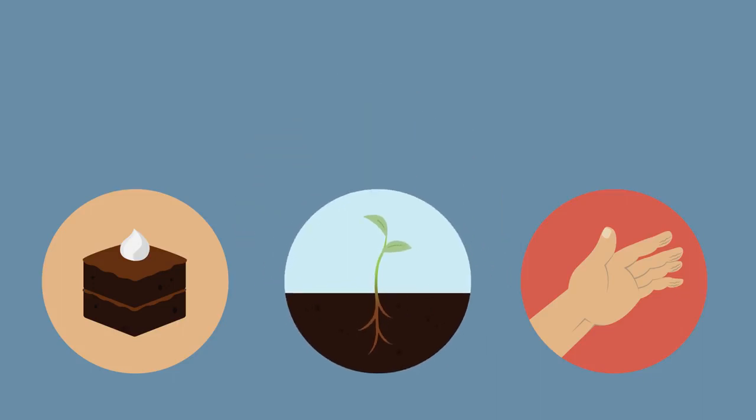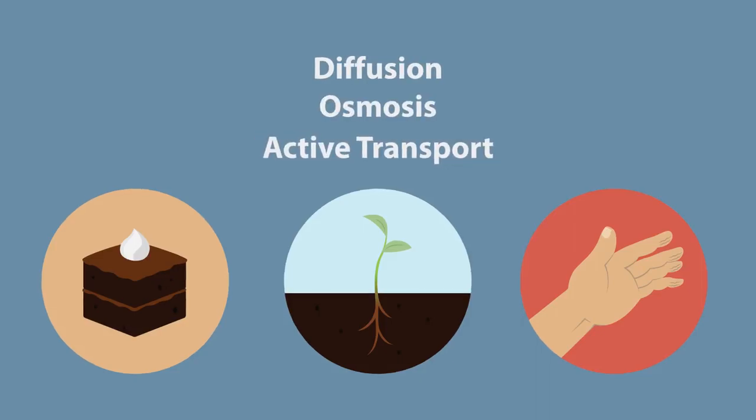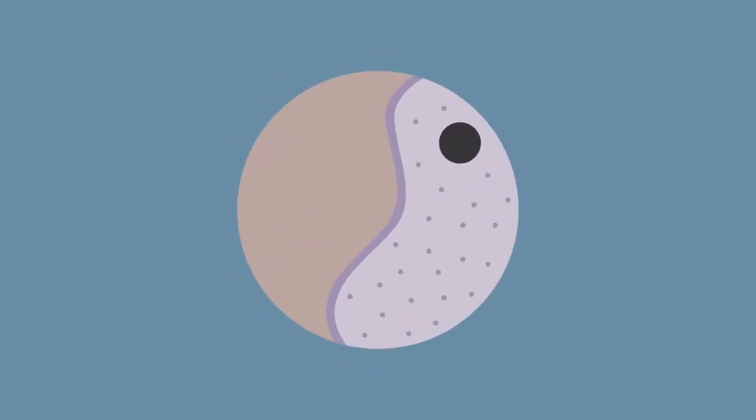All of these things require the movement of substances by either diffusion, osmosis or active transport. In this two-part series we're going to discover how cells take in useful substances and remove waste using these three methods of transport.